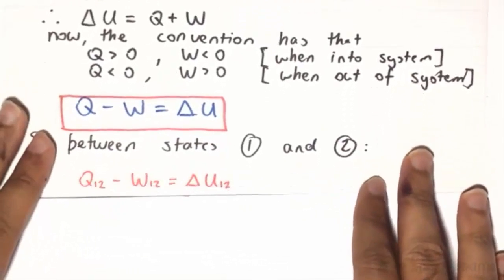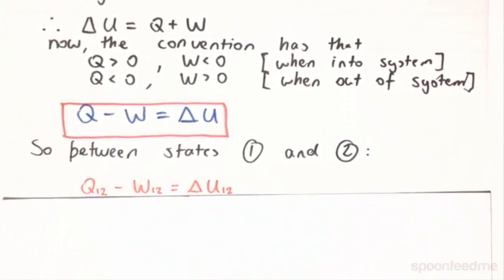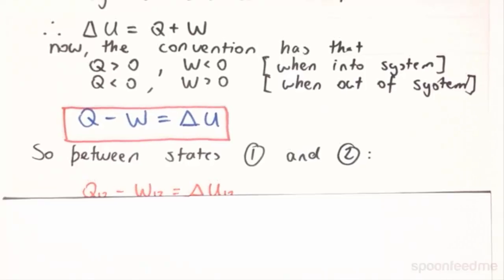And so between states 1 and 2, you just add in the subscripts: Q12 minus work 12 is equal to the change in U12.